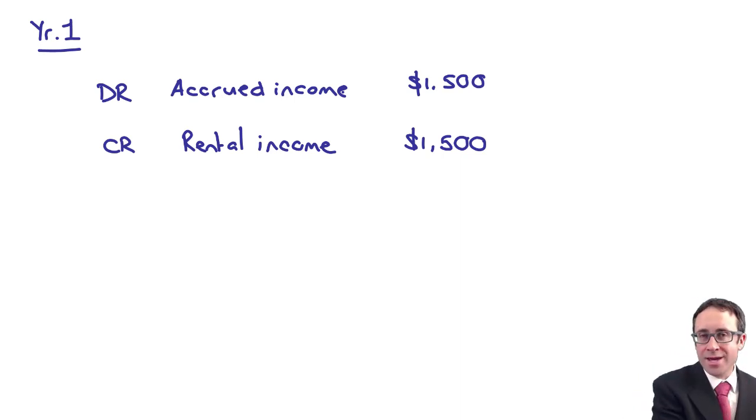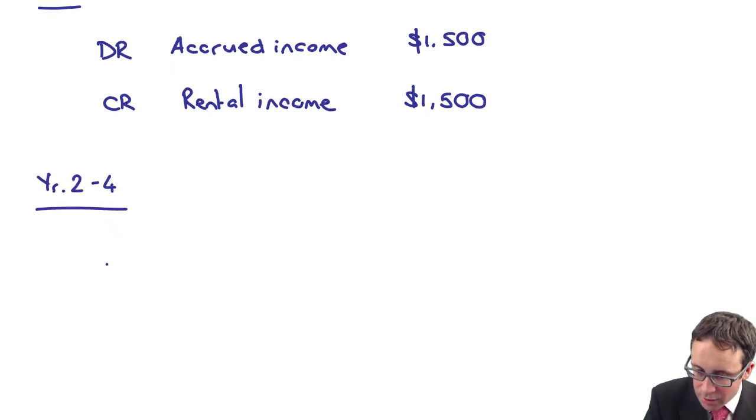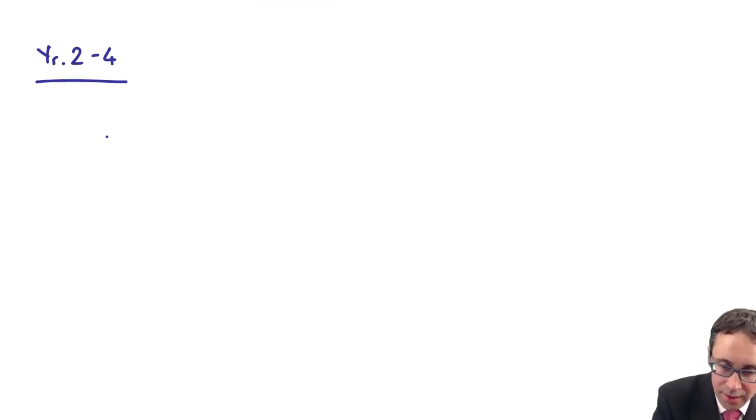Over the final three years of the lease when we recognize income of $1,500 but the cash that we receive is $2,000. Okay so what we've got there is in years two to four.